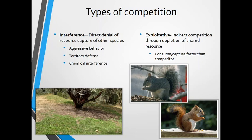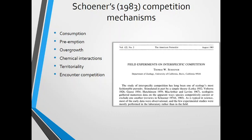We can further break competition down into other mechanisms. Thomas Schoner wrote a paper in 1983 and laid out these competition mechanisms. I don't particularly love these categories, but they're used relatively commonly and they do show different ways organisms compete. Most of them can be thought of in the context of interference and exploitative competition. The six types are: consumption, preemption, overgrowth, chemical interaction, territoriality, and encounter competition.